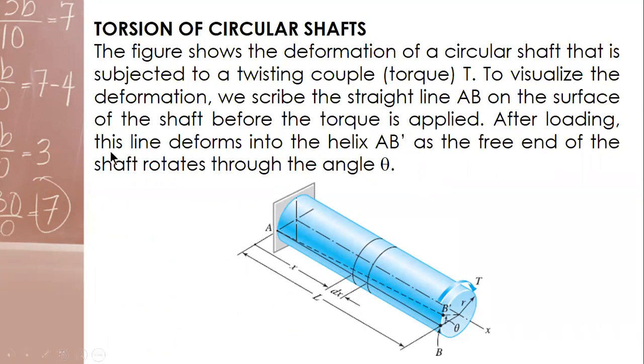And after loading, this line deforms into the helix EB prime as the free end of the shaft rotates through the angle theta. So initially we have line EB straight. When we apply the torque T, the point B will be moved to another point B prime, and it rotates by an angle of theta. Initially this was a straight line EB; now it becomes a helix.